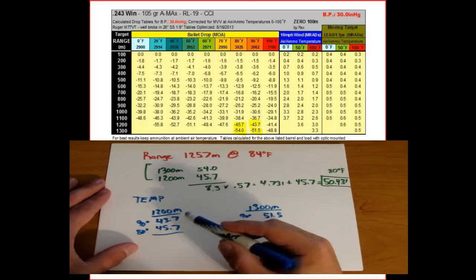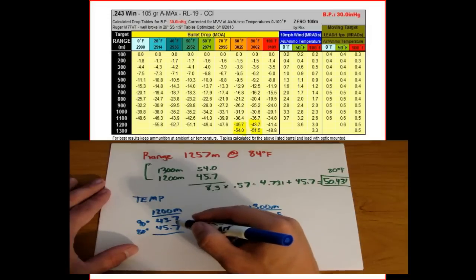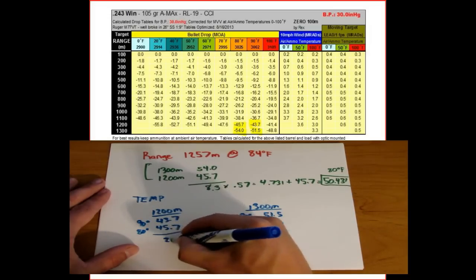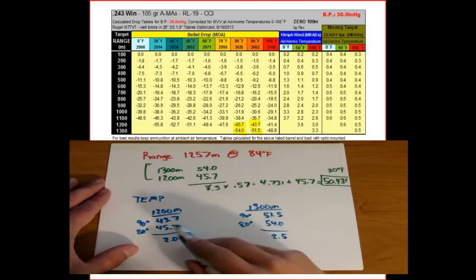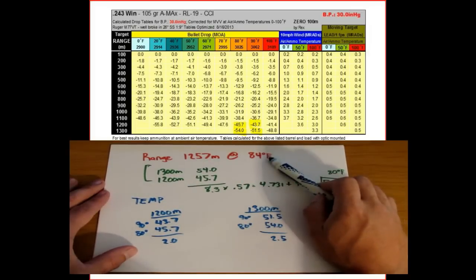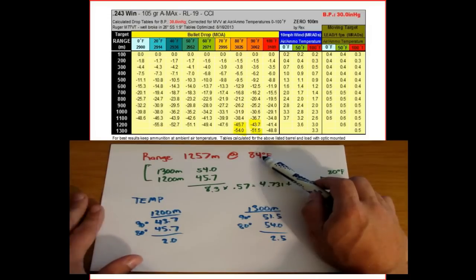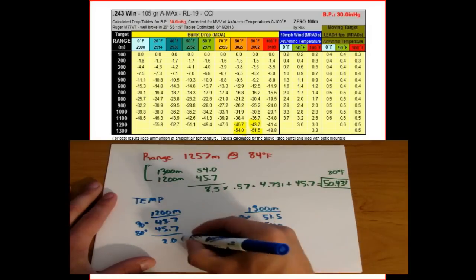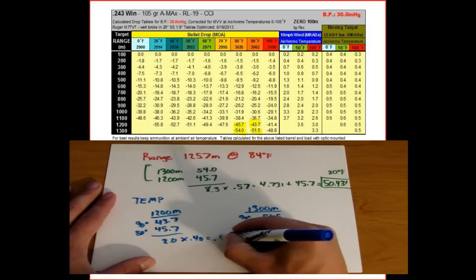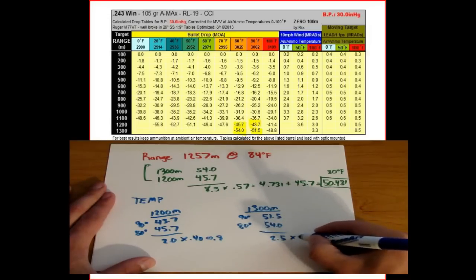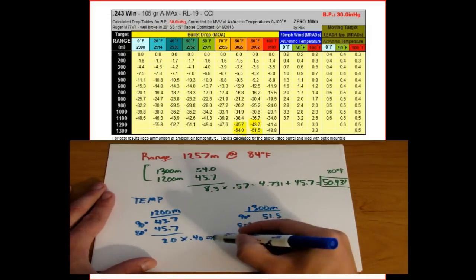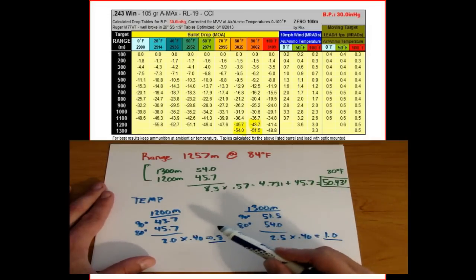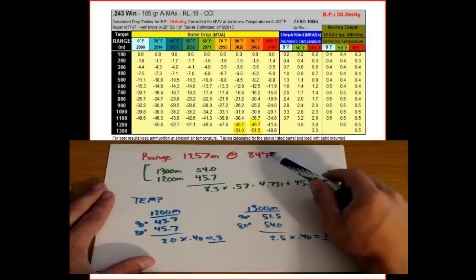We interpolate both ranges for temperature. At 1,200 meters the difference is 2.0; at 1,300 meters the difference is 2.5. Since we're at 84 degrees, that's 40% of the way from 80 to 90 degrees. Times 40%: the 1,200-meter correction is 0.8, and the 1,300-meter correction is 1.0. These are the temperature corrections for 1,200 and 1,300 meters at 84 degrees.